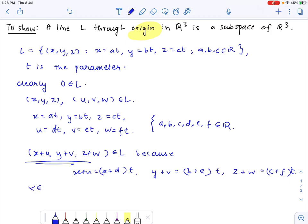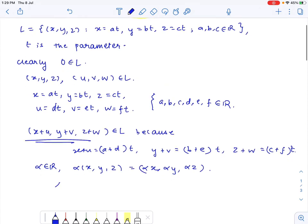Similarly if we have any scalar say alpha then the scalar multiple of (x, y, z) with alpha is (alpha x, alpha y, alpha z) and here alpha x can be written as alpha a times t, alpha y can be written as alpha b times t, and alpha z can be written as alpha c times t. So this again belongs to the line L.